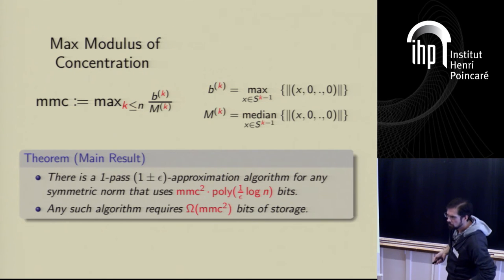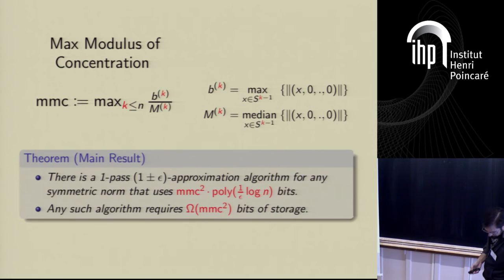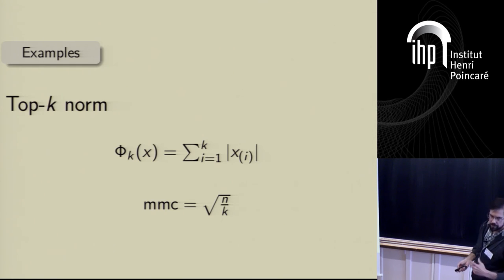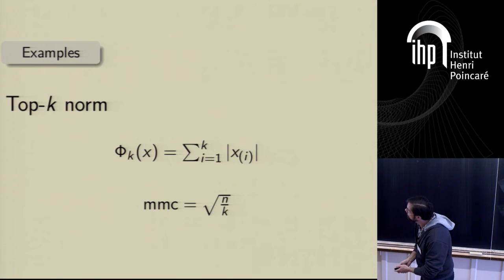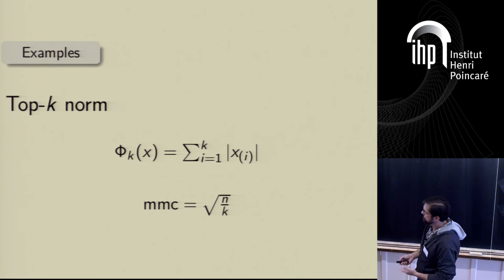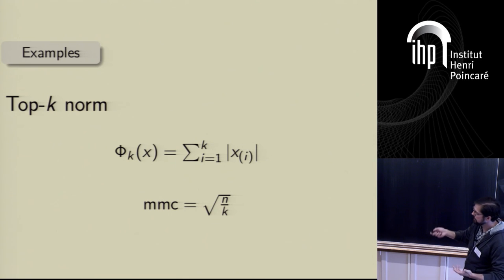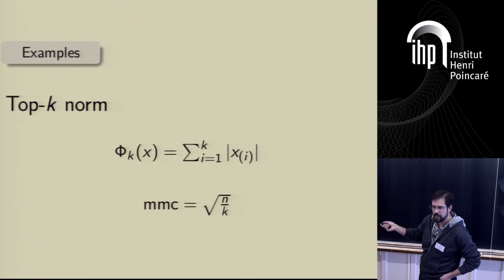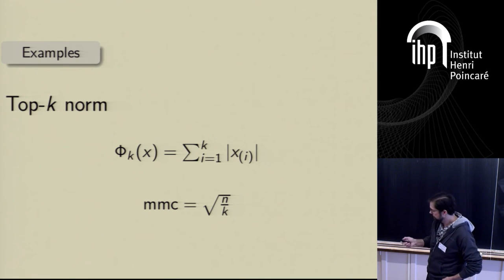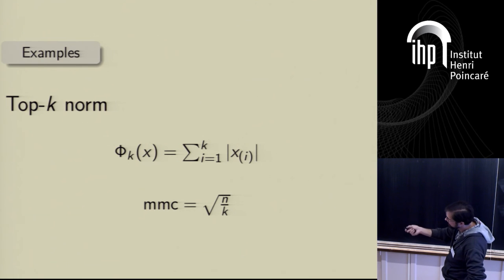I'll give two examples and then explain where measure concentration comes in. The first example is the Top-K norm, which interpolates between L1 and L∞: take the K largest coordinates in absolute value and sum them. The MC for this norm is √(N/K), so the space is about N/K. If K is linear in N, you get a polylogarithmic space approximation. The second example is the K-support norm, proposed as a regularizer for sparse recovery problems. There's no closed-form formula — there's an algorithm that computes it, and it's easiest to describe via its unit ball: take the L2 unit ball restricted to points with at most K nonzero coordinates, then take the convex hull.